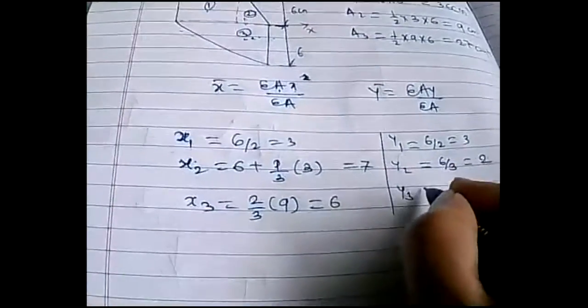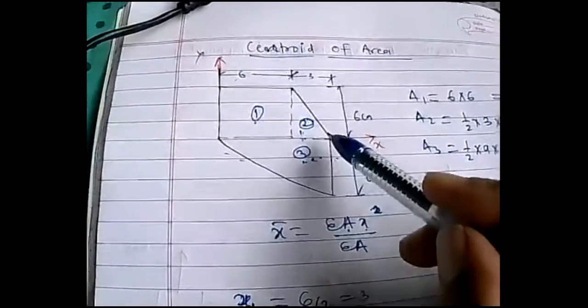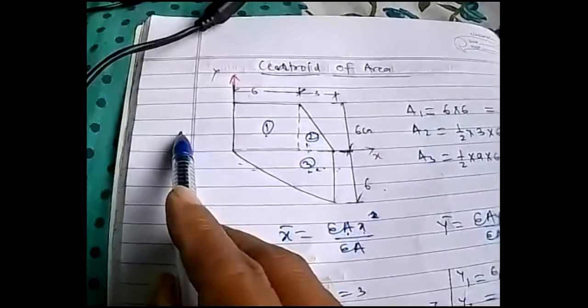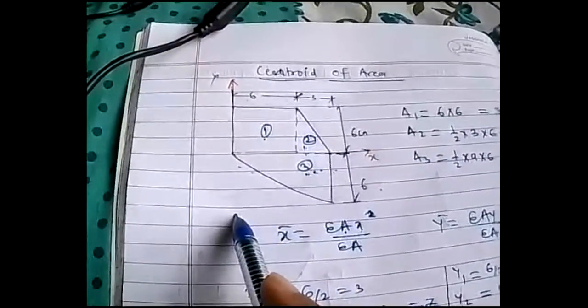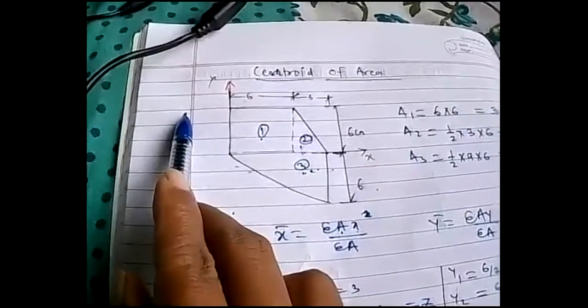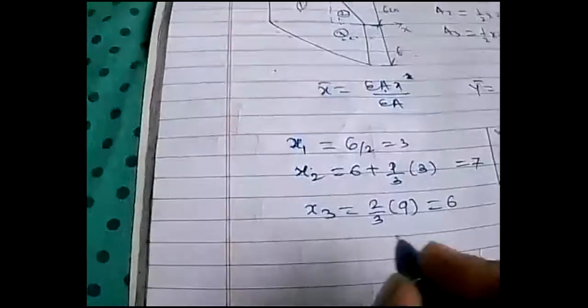For y3, remember: whenever your diagram is below the x-axis, your ȳ will be negative. If any portion is on the left-hand side of the y-axis, your x̄ will be negative. Here our y3 is below the x-axis, so it is negative: y3 = −6/3 = −2.